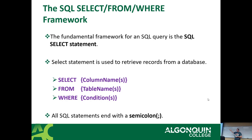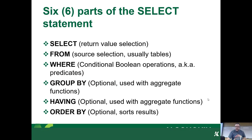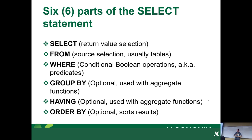SELECT is where you pick what you want to pull out of the database. FROM is which table — or tables — you're pulling from. WHERE is where you filter it down. That's the full list of pieces, and today we're only going to worry about the first three: SELECT, FROM, and WHERE. The next two have to do with aggregate functions, and the last one is for sorting. We might touch ORDER BY a little bit today.